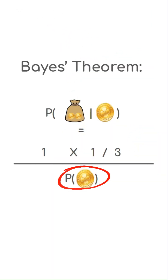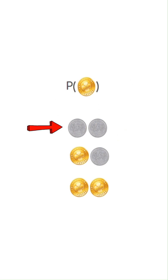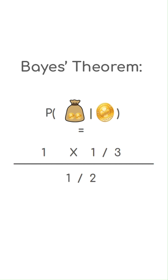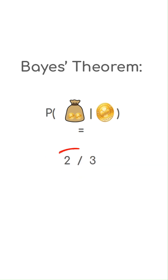Finally, we are left with the probability of picking a gold coin initially. Well, we had two silver coins in one bag, one gold and one silver in another, and two gold coins in the last bag. So in total, three gold coins and three silver coins. Therefore, the probability of picking gold would be three over six, or one-half. Putting that all in, we can calculate the probability of the other coin in the bag being gold to be two-thirds.